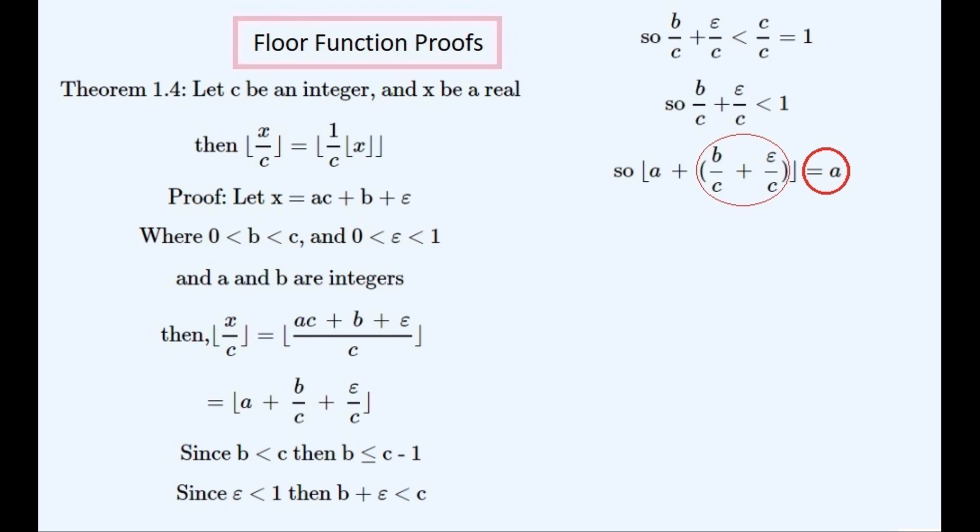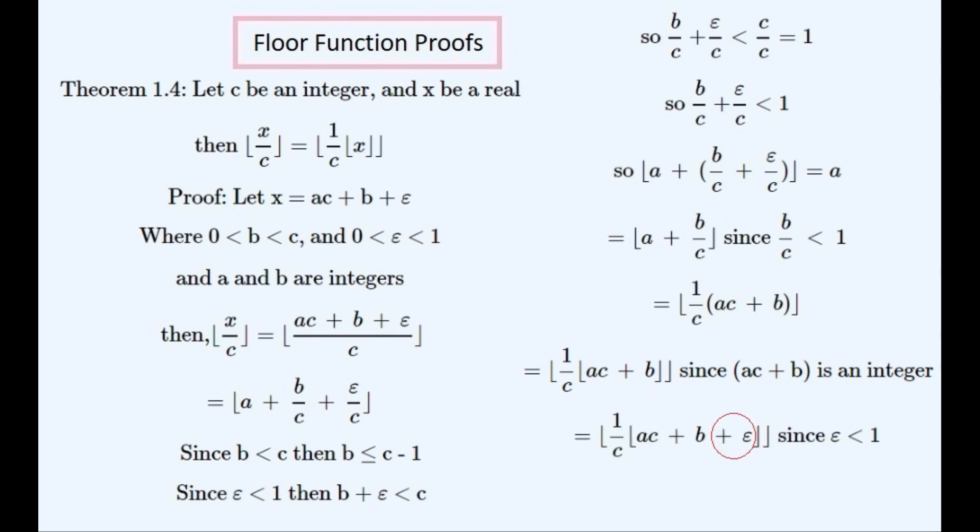So we can put brackets around this expression, highlighting that it is less than 1. And so this function returns a as the answer. And we can add this to a inside the floor function since it is less than 1 and added to an integer. And we can write the second floor function in because it is an integer. And we can add the epsilon onto the end since it is less than 1 and added to an integer. And we can substitute x back in for this expression, thereby completing the proof. I have rigorously tested this theorem using a computer program as well.